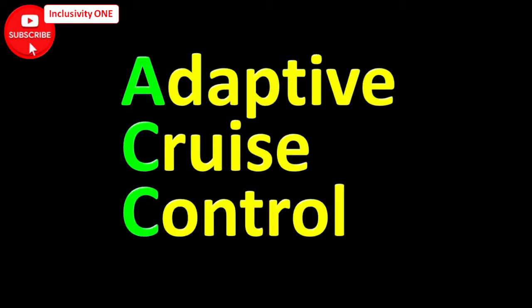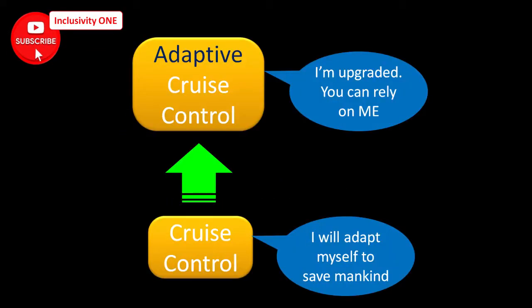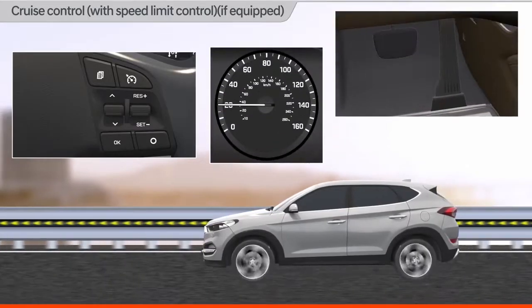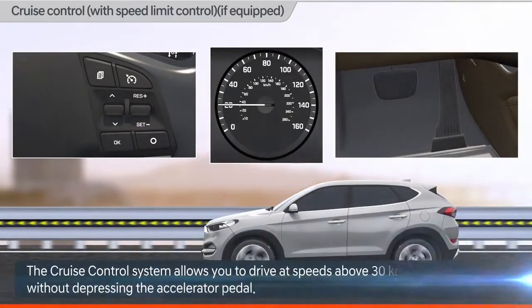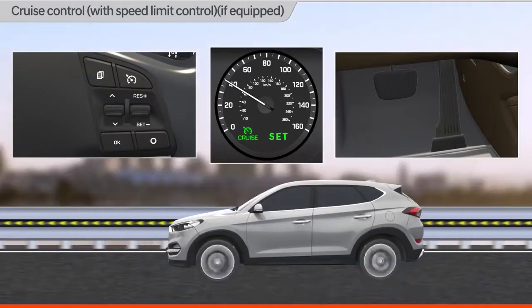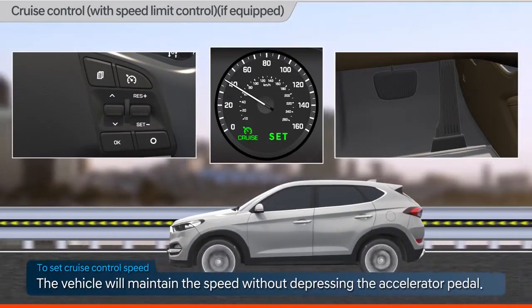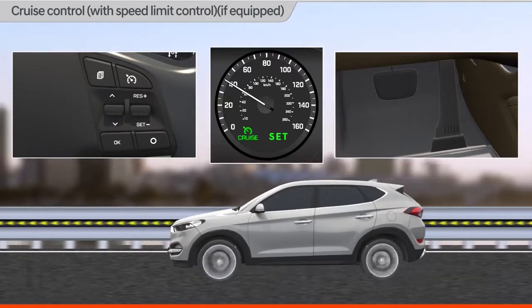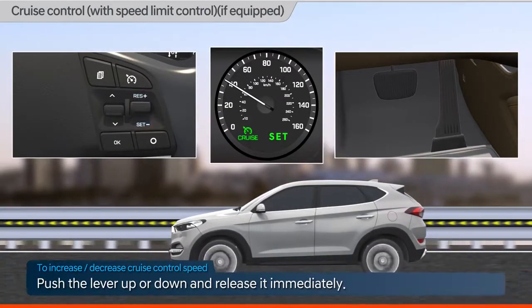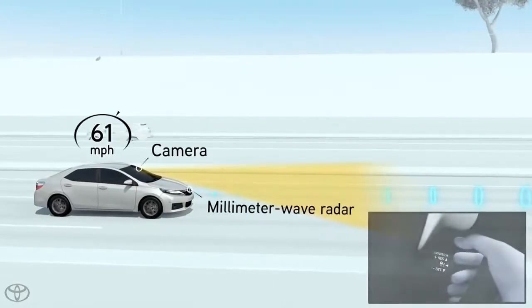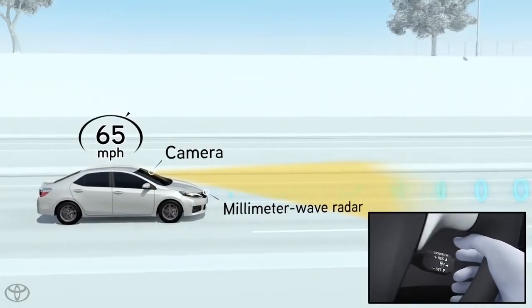Let's go through some ADAS systems. ACC — Adaptive Cruise Control — is an upgraded version of cruise control. Cruise control is a system which controls the speed of the vehicle, allowing it to drive at a required speed and thereby reducing driver fatigue on highways. In adaptive cruise control, more features are added.